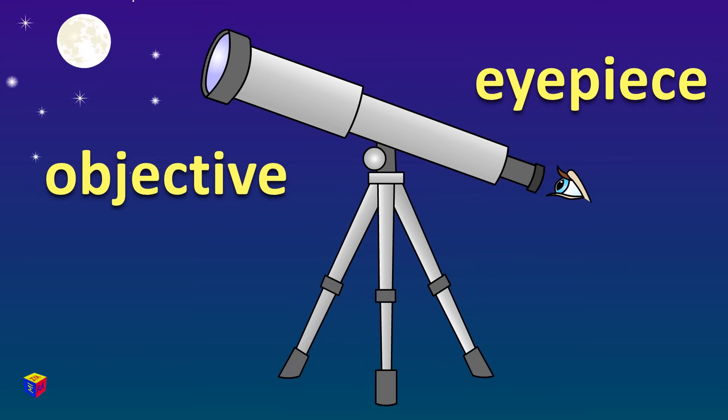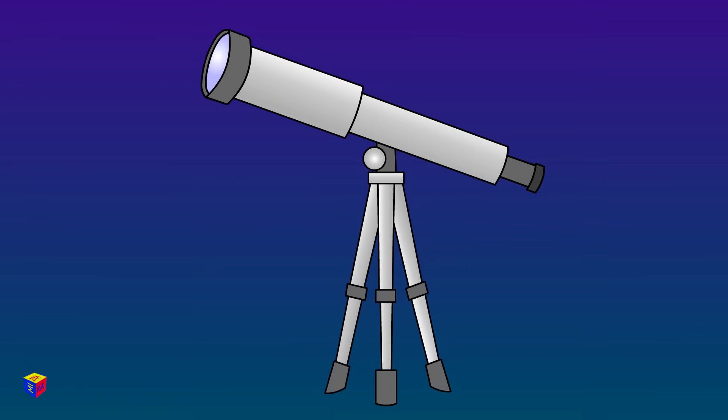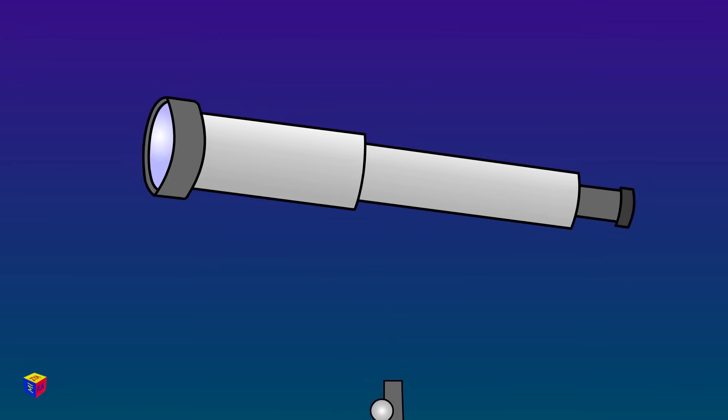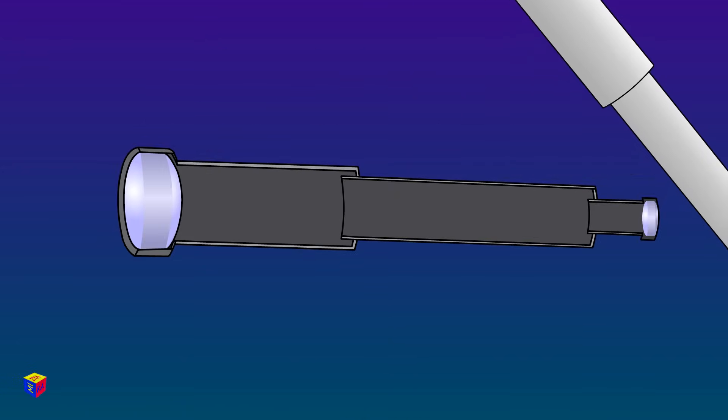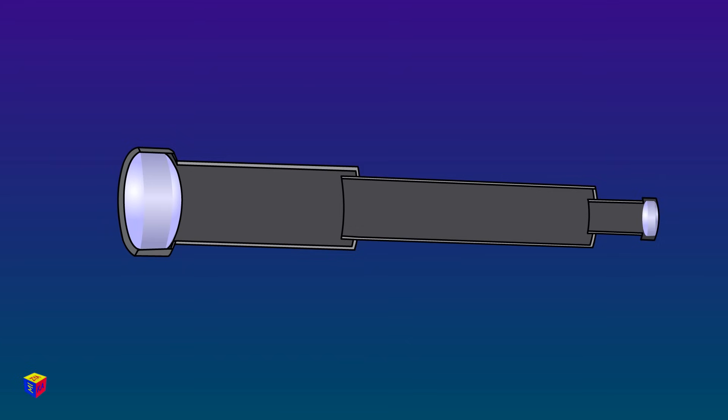The word eyepiece is derived from the word eye. Well, shall we look inside the tube? Inside are the most important parts of the telescope, the lenses.